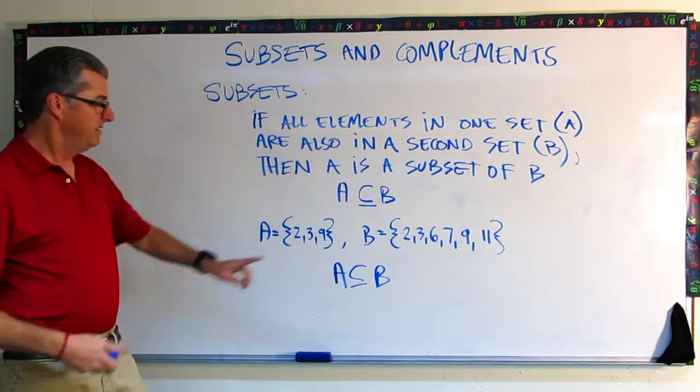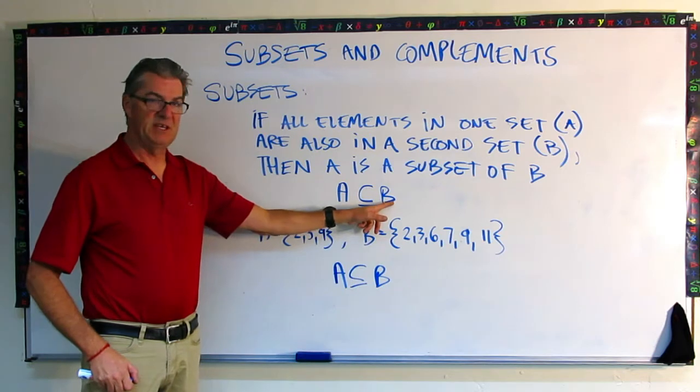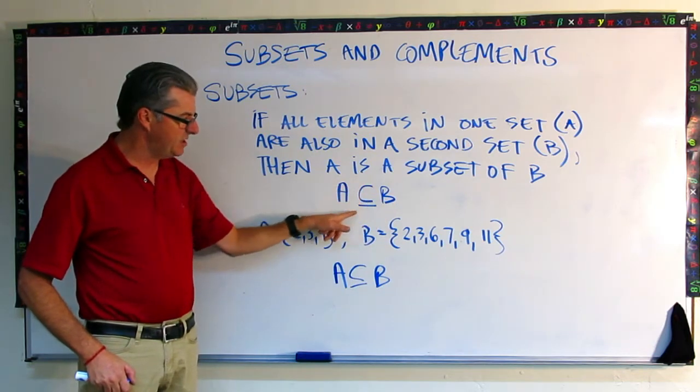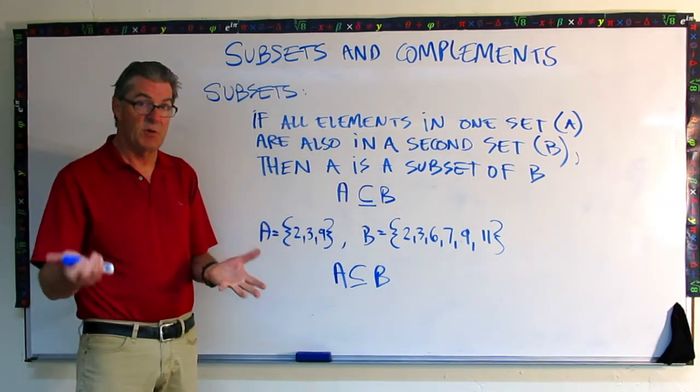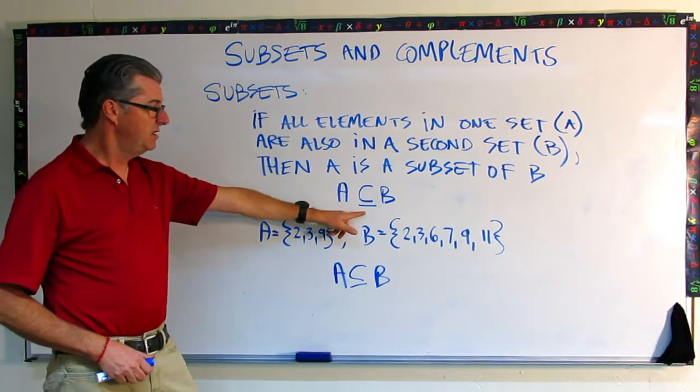So we have notation for that. We write A is a subset of B. This is like that little C with a line below. It's kind of a strange symbol, but that's how we do that. So this means A is a subset of B.